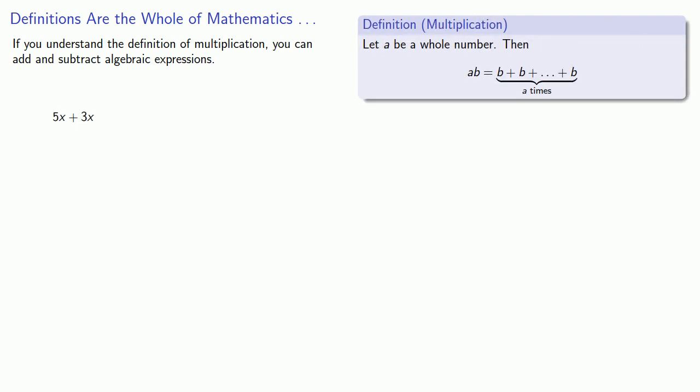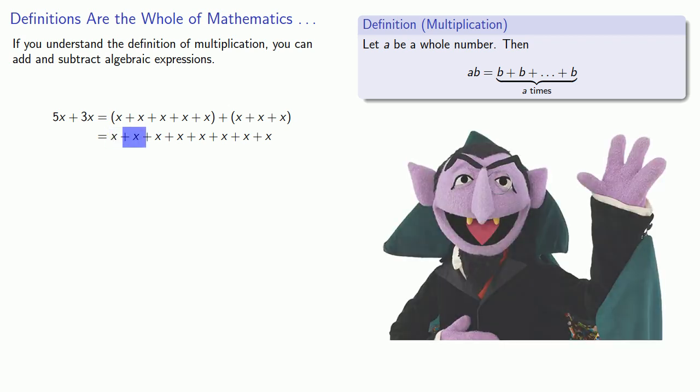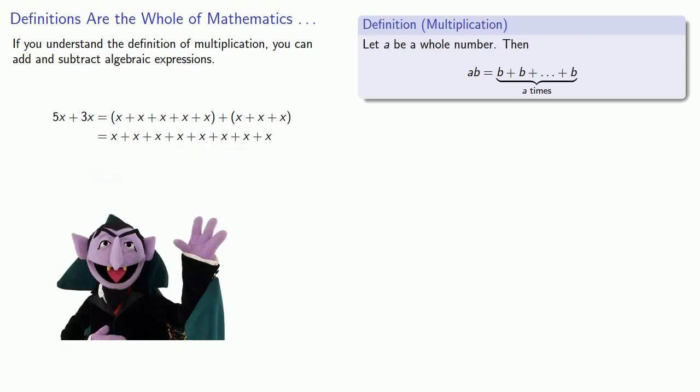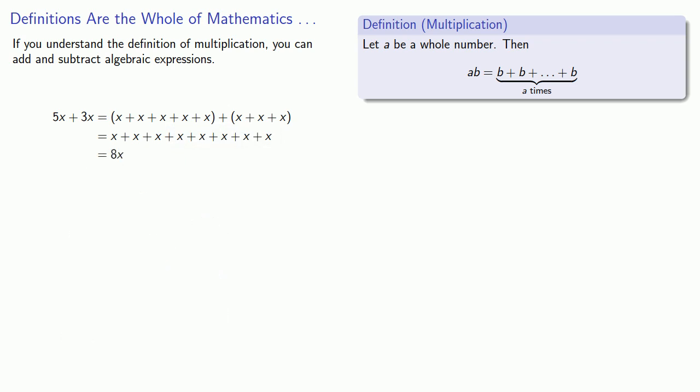If you understand the definition of multiplication, you can add and subtract algebraic expressions. So let's pull back that definition of multiplication. Let's say I want to find 5x plus 3x. Well, 5x is the sum of 5 x's. And 3x is the sum of 3 x's. Because the only operation on the right-hand side is addition, we don't need the parentheses anymore. So let's count! 1 x, 2 x's, 3 x's! You get the general idea. If we count the x's, we find we have 8 x's! And so 5x plus 3x is equal to 8x.